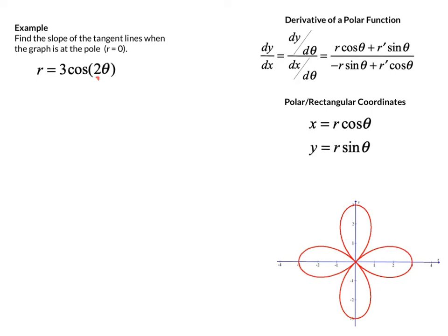The cosine — if theta is 0, the cosine of 0 is 1 and the radius is 3. So this graph is going to start out at (3, 0) in polar coordinates, which is also (3, 0) in rectangular. And as you rotate around in a positive direction, this graph is going to follow this path around the rose.